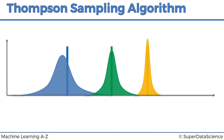That is pretty much how the Thompson sampling algorithm works. As you can see, it is a probabilistic algorithm. Every time we generate these values, we create a hypothetical setup of the bandits, solve that, apply the results to the real world, and adjust our perception of reality based on the new information. In the next tutorial we're going to compare the upper confidence bound and the Thompson sampling algorithm. Until next time, happy analyzing.